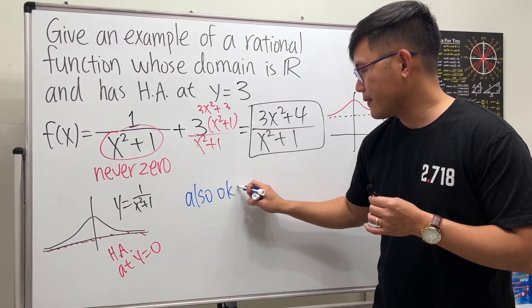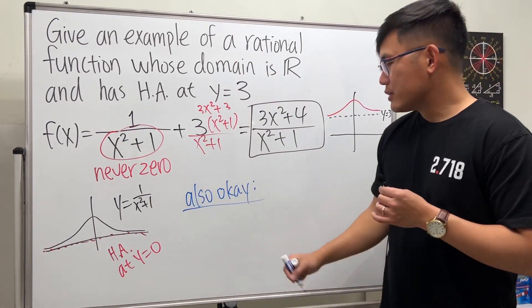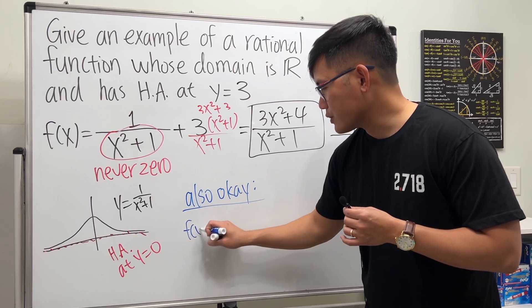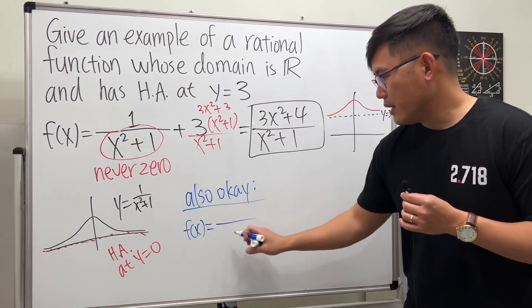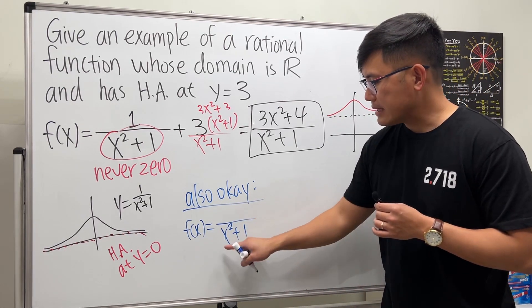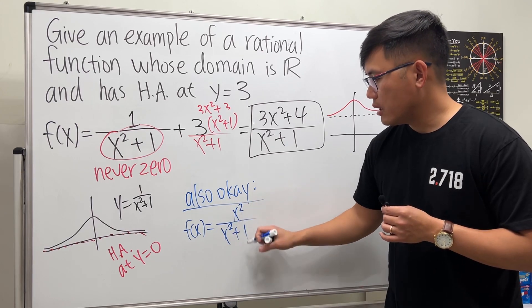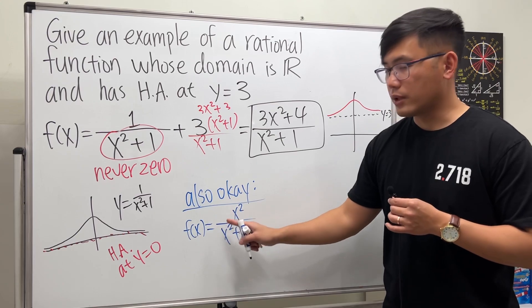I will just say also okay. Also okay because we just want to give an example, right? So it's also okay to say our function is equal to—here's the thing: once you pick the bottom x squared plus 1, as long as the top has the same degree, that's x squared.